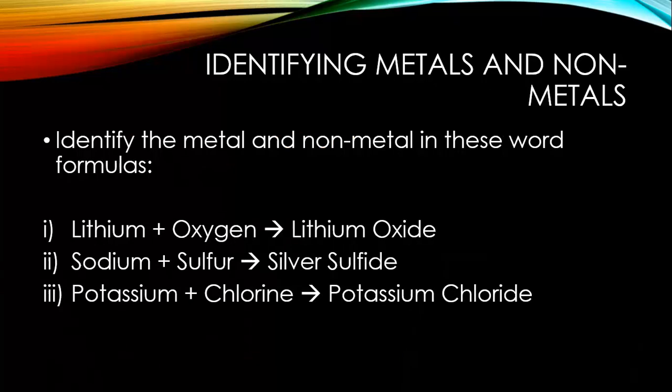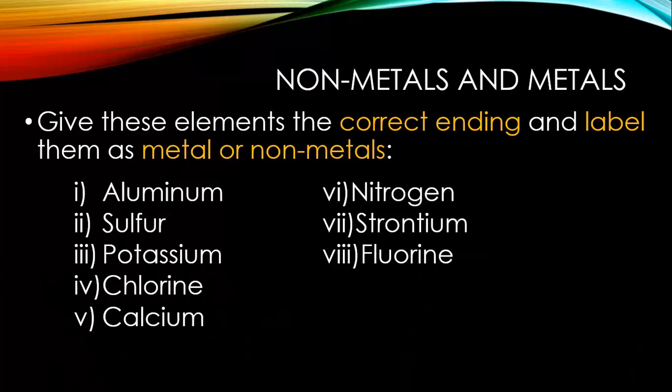You can practice by identifying the metals and non-metals in these word formulas. Remember that the non-metal changes its name, the metal keeps its name. The metal comes first, then the non-metal comes second in reactants and products. Give these elements the correct endings and label them as metal and non-metal by adding IDE if necessary. You'll need your periodic table to identify which are metals and which are non-metals. Remember, non-metals change their name like the female changing her last name when married.